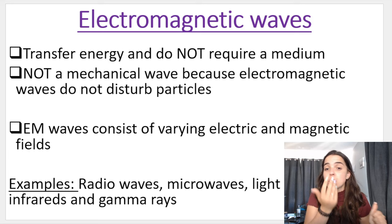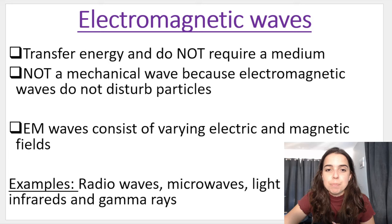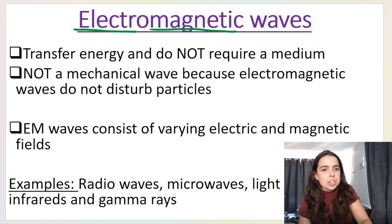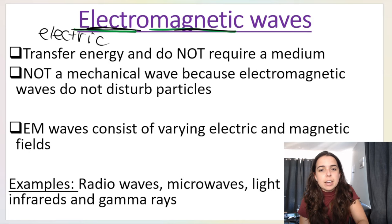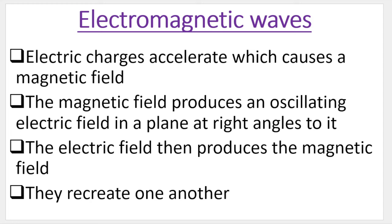Remember mechanical waves like sound waves, longitudinal waves, and transverse waves disturb the particles — they cause the particles to vibrate and energy gets transferred from one particle to the next. Electromagnetic waves are different. They consist of varying electric and magnetic fields. 'Electro' being electric fields and 'magnetic' being magnetic fields. This is how the field is produced: electric charges accelerate, which causes a magnetic field; the magnetic field then produces an electric field; and they recreate one another — electric produces magnetic, magnetic produces electric — and that is how the energy is transferred.